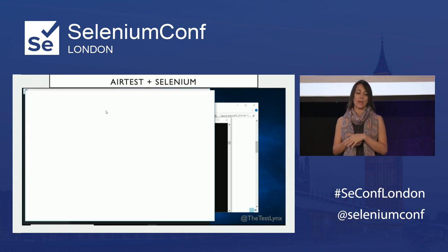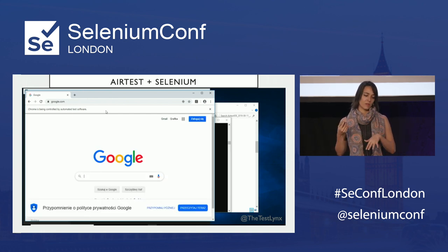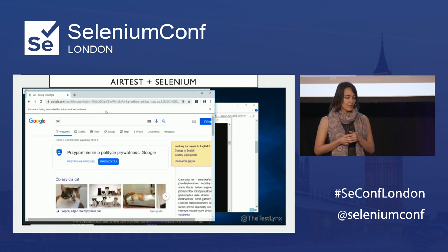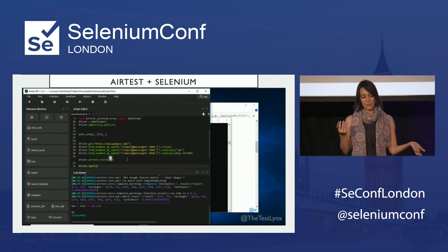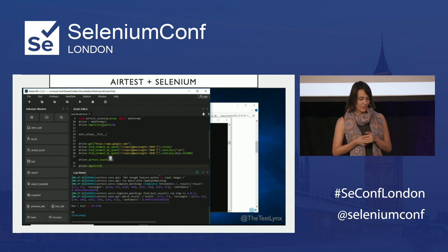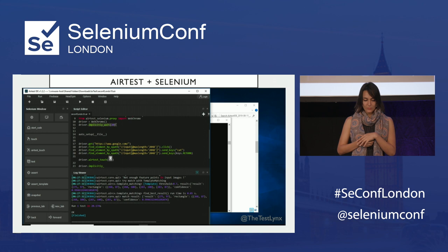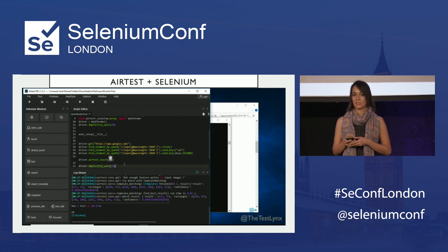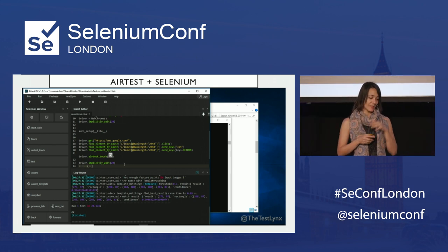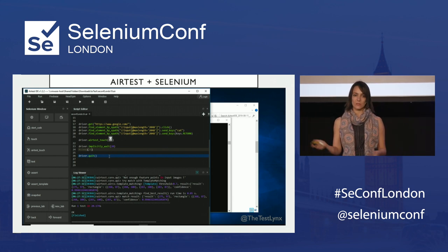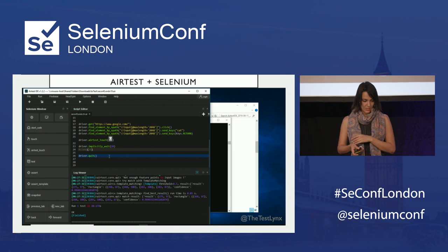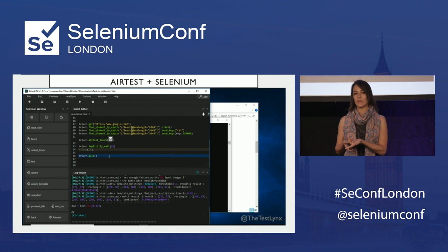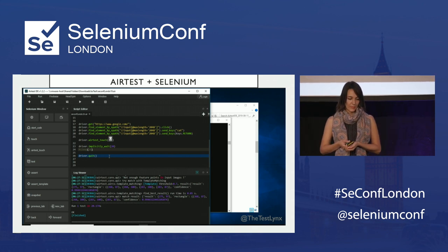I added driver.quit manually so Chrome will close. Now I'm just running it — this is all automatic, I'm not touching the mouse. It was a bit fast. Just so you know, it can fail as well. I add a sleep method — this is all Python, so whatever you do in Python you can still do here — so the driver won't close so fast and you can see the image being selected.